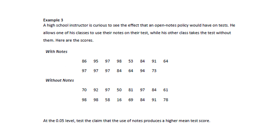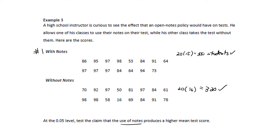Here's an example. A high school instructor is curious to see the effect that an open notes policy would have on tests. He allows one of his classes to use their notes on their test, while his other class takes the test without them. At the 0.05 level, test the claim that the use of notes produces a higher mean score. The use of notes is mentioned first in the claim, so we'll let 'with notes' be population 1. There were 15 students who took the exam with notes — 20 times 15 is 300, and we know there are more than 300 students. Without notes, that's 20 times 16 or 320 students; again, we know there are more than that. So those conditions are met.